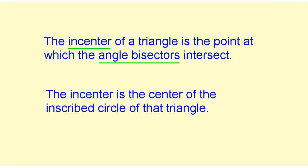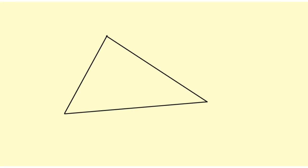The incenter of a triangle is the point at which the angle bisectors intersect. The incenter is the center of the inscribed circle of that triangle. To find the incenter of this triangle, we need to bisect all of the angles.